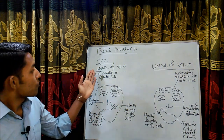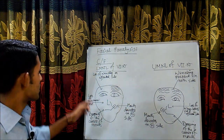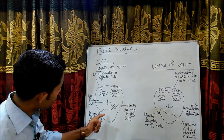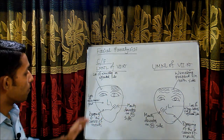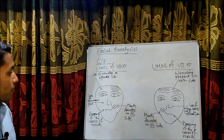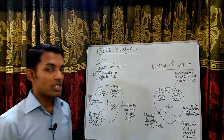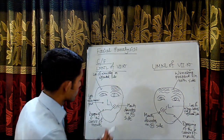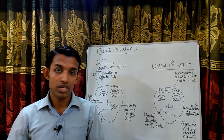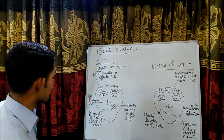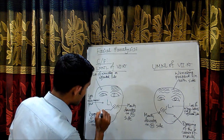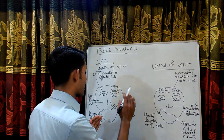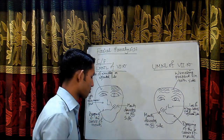The clinical features of lower motor neuron type of facial nerve paralysis are: loss of wrinkling on the affected side, loss of nasolabial fold on the affected side, and drooping of the corner of the mouth on the affected side, but the mouth deviates to the normal side. The mouth deviates to the normal side because muscles like levator labii superioris, zygomaticus major, zygomaticus minor, and buccinator are paralyzed on that side.